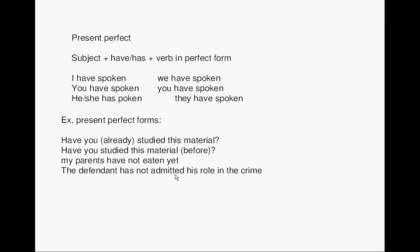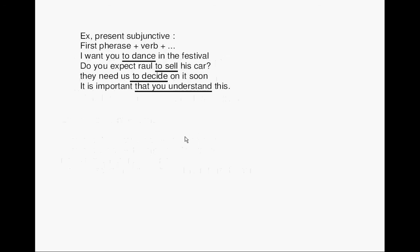Present subjunctive: first phrase plus verb plus the rest. I want you — that is the first phrase — the verb is to dance — in the festival. I want you to dance in the festival. Do you expect Raul to sell his car? First phrase and verb and the rest. They need us to decide on it soon. It is important that you understand this.